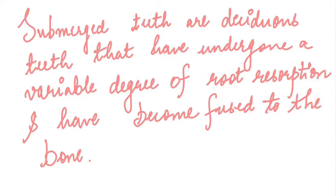As a result, they have become directly fused to the underlying bone. Due to certain etiological factors, there is some trauma to the tooth, and as a result the periodontal ligament, which is supposed to be between the alveolar bone and the root, is not present in such teeth — they are directly attached to the underlying alveolar bone.